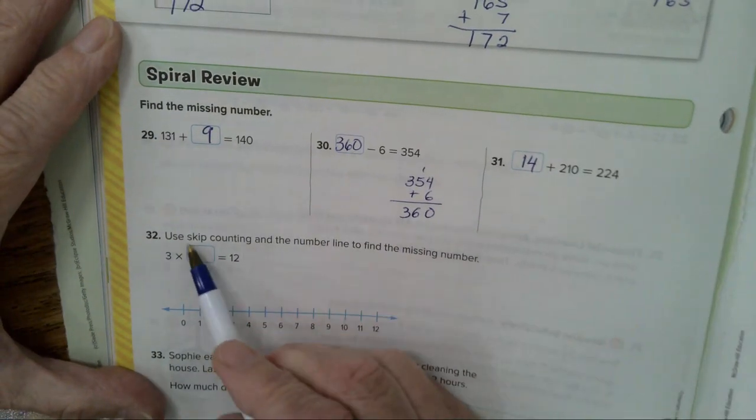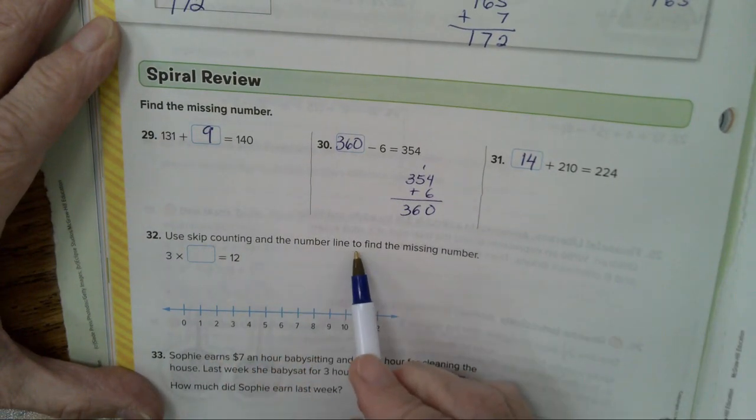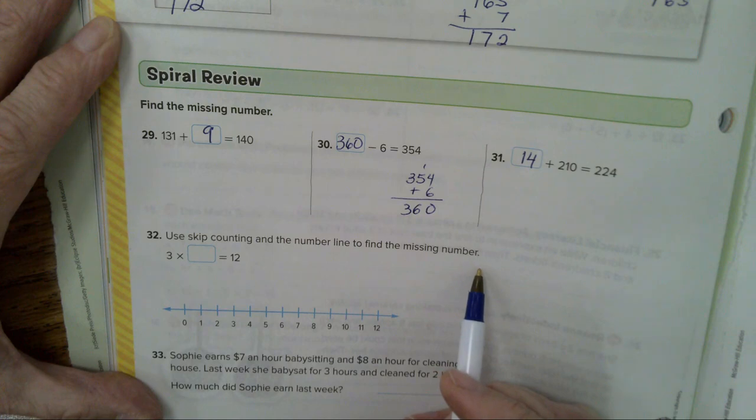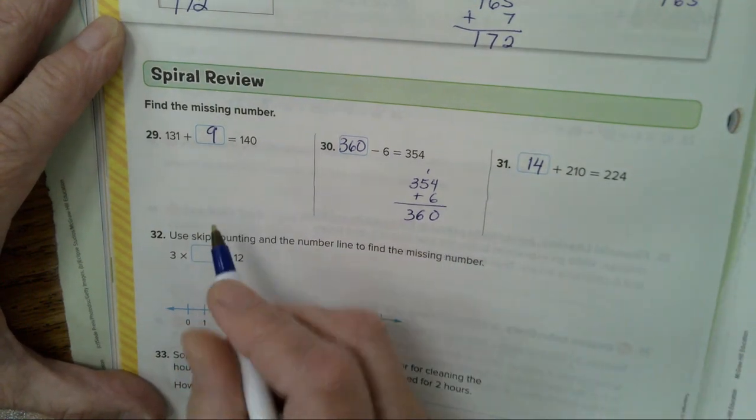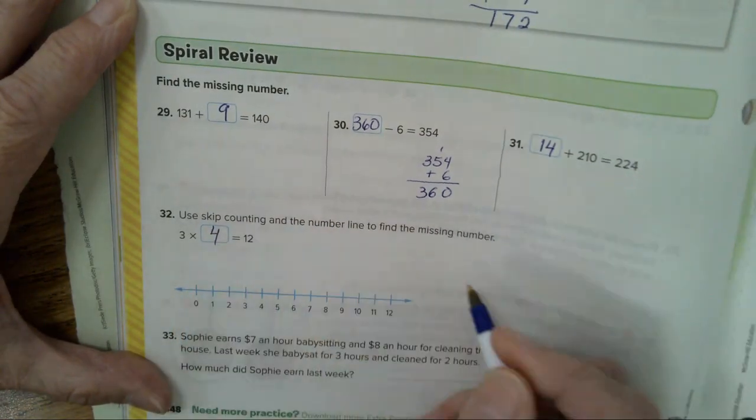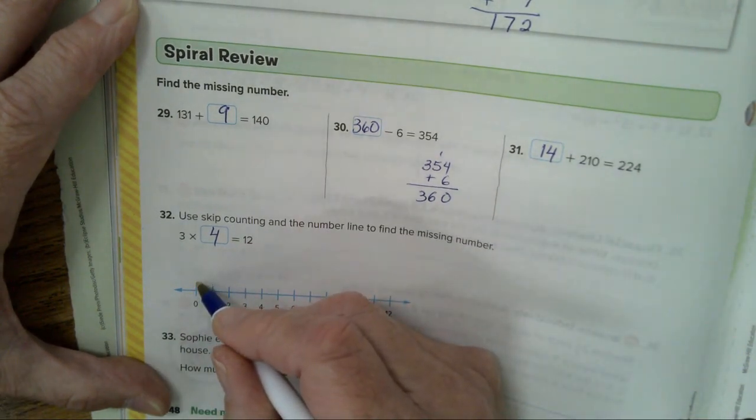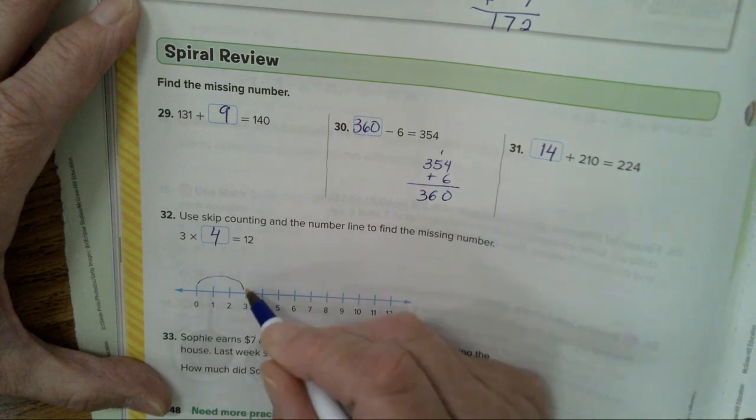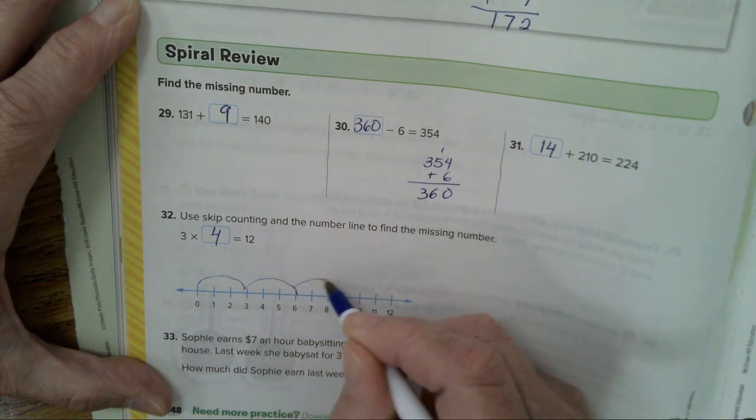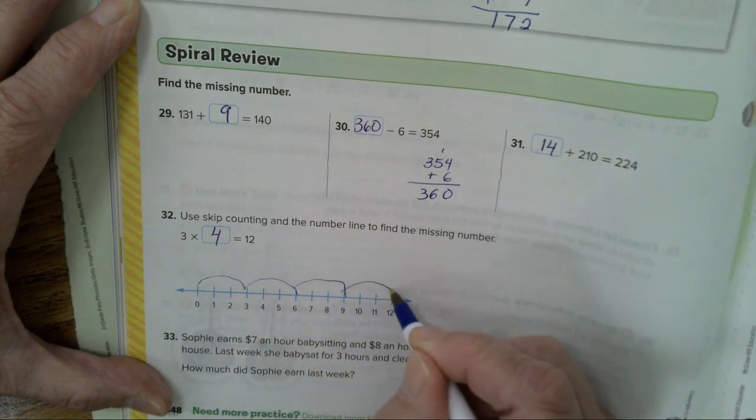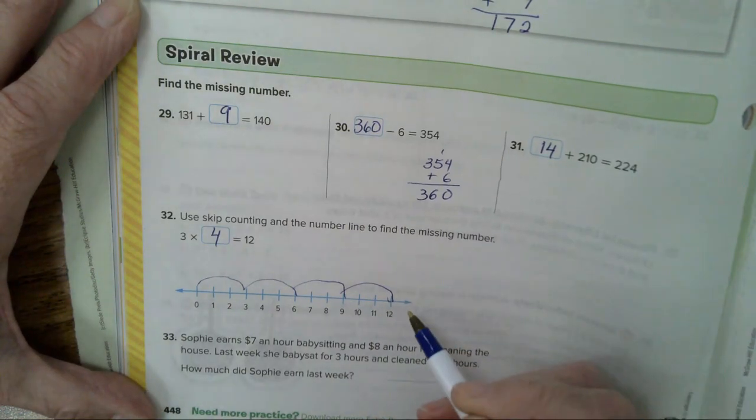Number 32. Use skip counting and the number line to find the missing number. Well, I think you all know the answer to this one is 4. And if you would start at 0 and you would go over 1, 2, 3, 4 groups of 3 equal 12.